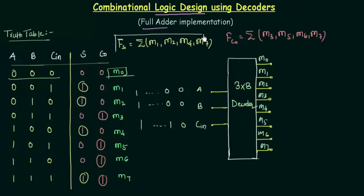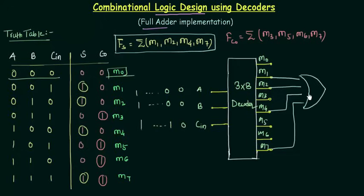For this sum we are having min terms 1, 2, 4, 7. So I will take 1, 2, 4 and 7. I will give it as the input to 1 OR gate and the output will be your sum. Very simple.